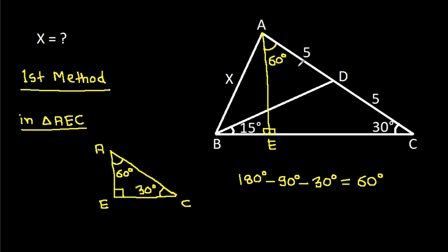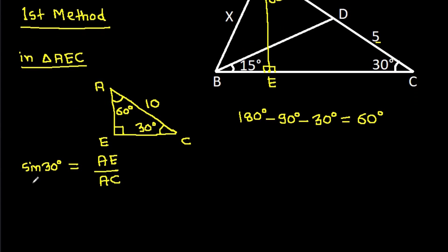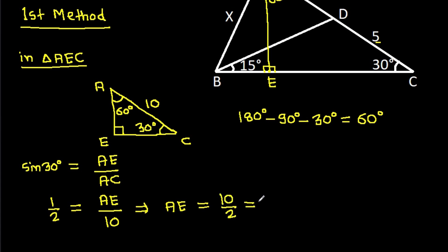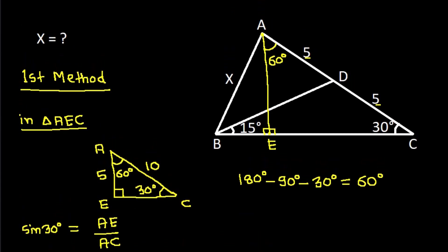We have AC equal to 5 plus 5, that will be 10. And sin 30 degrees equals AE divided by AC, which is 10. Sin 30 is 1/2, so AE equals 10 divided by 2, that will be 5. AE is 5.